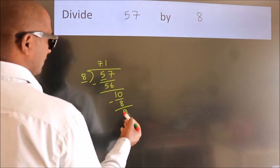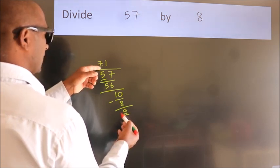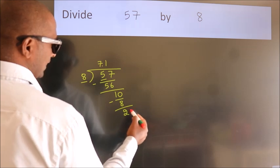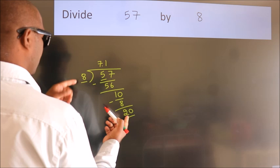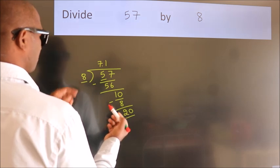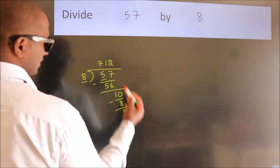After this, we already have the decimal. So directly take 0. So, 20. A number close to 20 in 8 table is 8 times 2 equals 16.